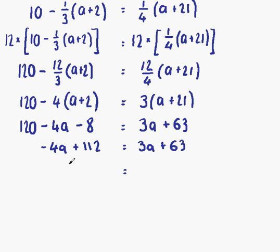Next thing we do is put our letters to the left and numbers to the right. Looking along the line, the first thing that has to move is plus 112. And the other thing that needs to move is our 3a. Putting down the things that are staying where they are, we have minus 4a on the left-hand side and we have 63 on the right-hand side.